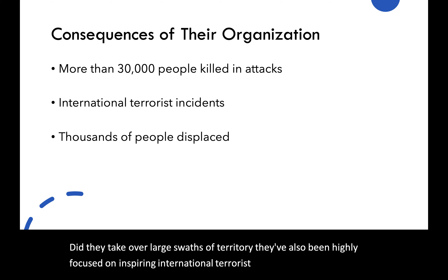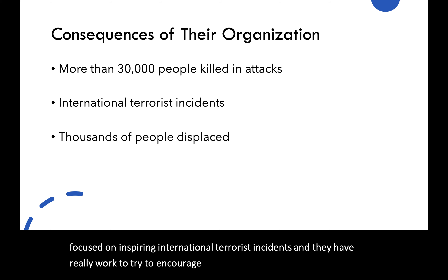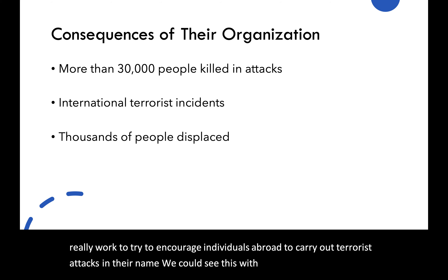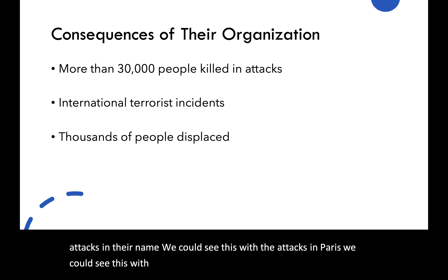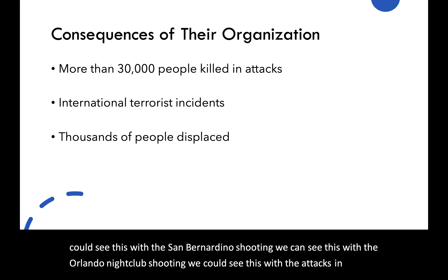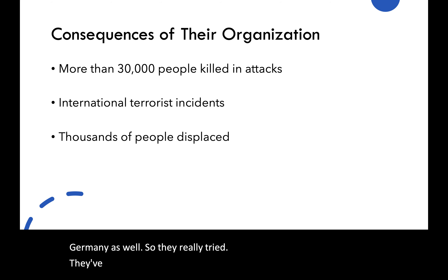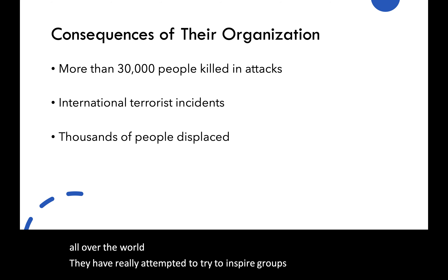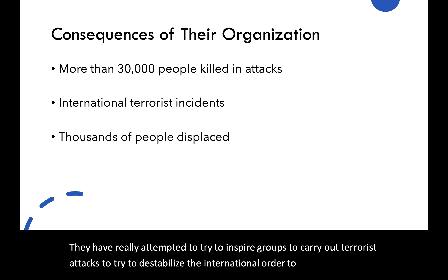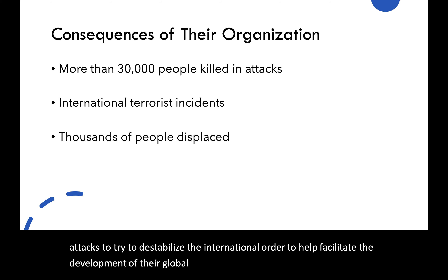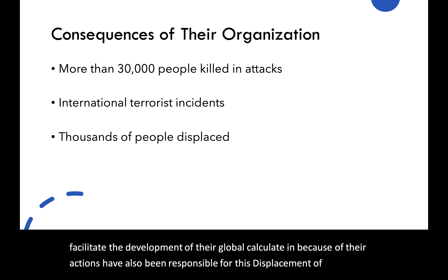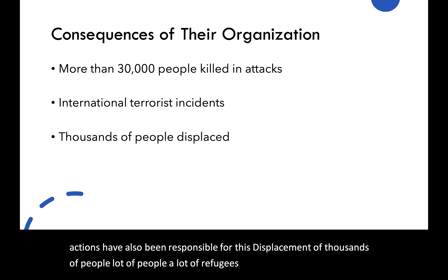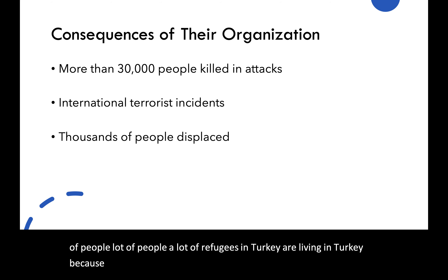ISIS has also been highly focused on inspiring international terrorist incidents, working to encourage individuals abroad to carry out attacks in their name. We can see this with the attacks in Paris, the San Bernardino shooting, the Orlando nightclub shooting, attacks in Germany, and inspired groups in Turkey as well. All over the world, they have attempted to inspire terrorist attacks to destabilize the international order and facilitate the development of their global caliphate. Their actions have also been responsible for displacing thousands of people — many refugees in Turkey fled Syria because of both the civil war and the expansion of ISIS's power.